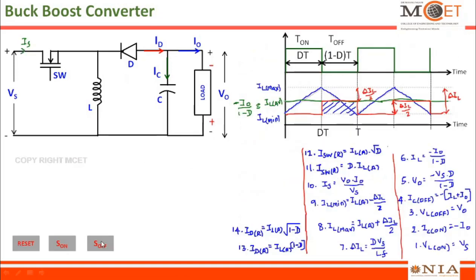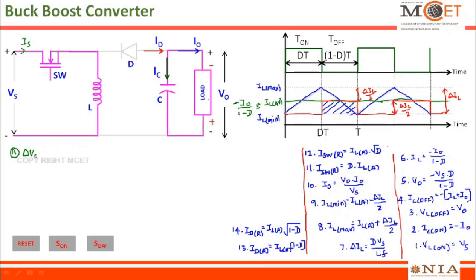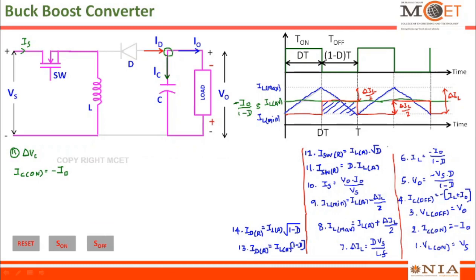The ripple in capacitor voltage can be calculated by considering the on state of the switch. When in this state only, the capacitor is delivering power to the load, which means the energy stored in the capacitor is now releasing its energy to the load. The eleventh part of the derivation: in order to calculate delta Vc, I am considering the on state of the switch, during which only the capacitor is releasing its energy into the load. Let me write the second equation here: Ic_on is equal to minus I0. This is derived by applying KCL at this node, because the current through the diode is zero since it is in off condition.